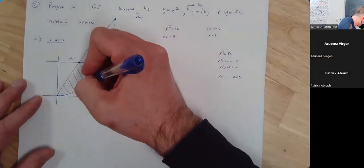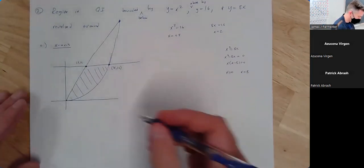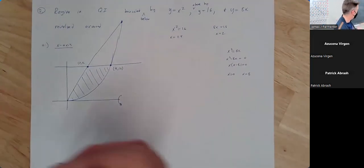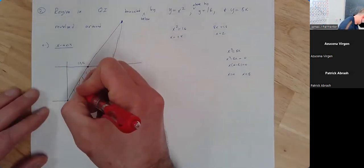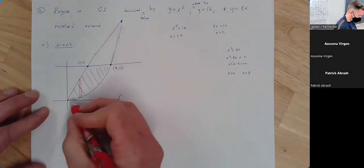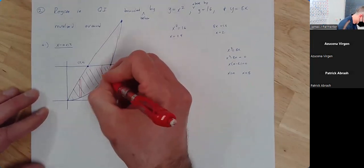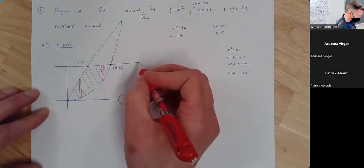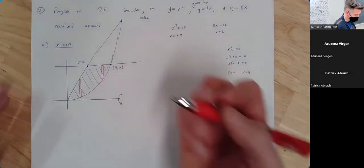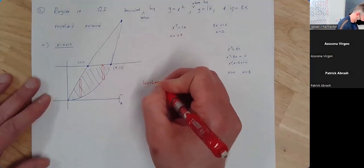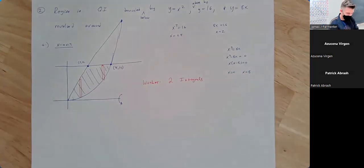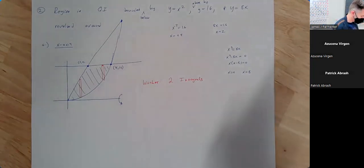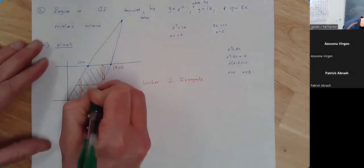So we're looking at this region, and if we're going around the x-axis, we certainly could use a vertical strip, but that's going to be more work — we'd need two intervals. A vertical strip here has outer radius 8x and inner radius x squared, but a vertical strip in the other part has outer radius 16 and inner radius x squared. So if I do washer, it would have to consist of two integrals. Instead we're going to use the shell method with a horizontal strip.